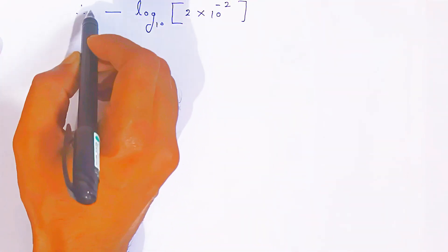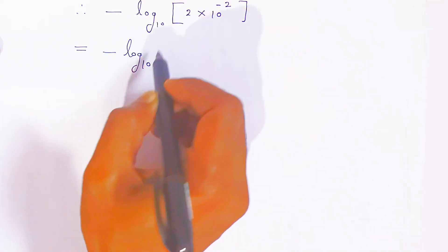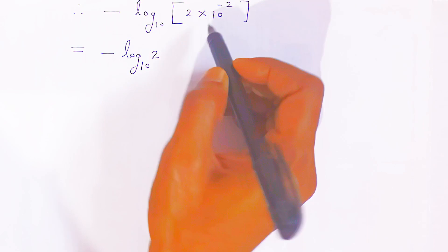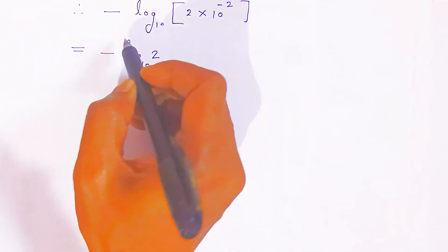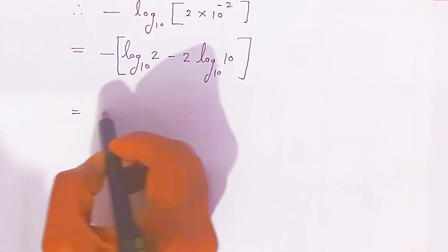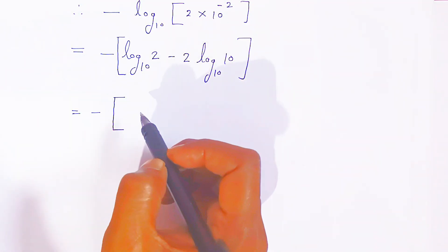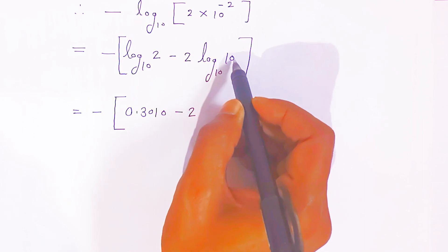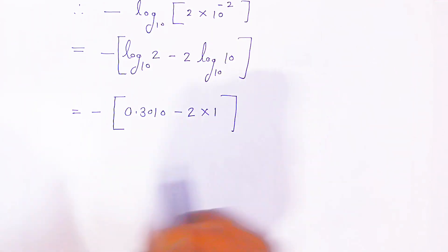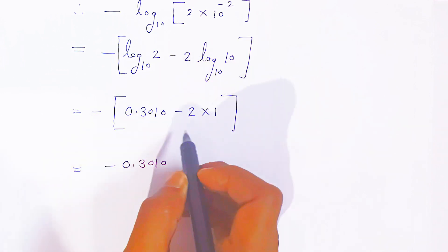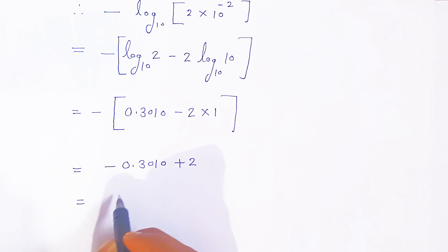Applying log properties, this becomes: −log₁₀(2) − log₁₀(10⁻²). Since log₁₀(10) = 1, the second term gives −(−2) × 1 = +2. So we have: −log₁₀(2) + 2, which equals −0.3010 + 2.